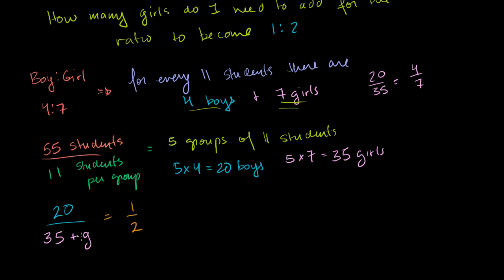So I have an equation. I have 1 unknown. I could just solve for it. You could almost do this one in your head. 20 is to what? 1 is to 2 as 20 is to what? 20 is half of 40. So this must be 40. So g would be equal to 5. That's how you would solve it in your head.